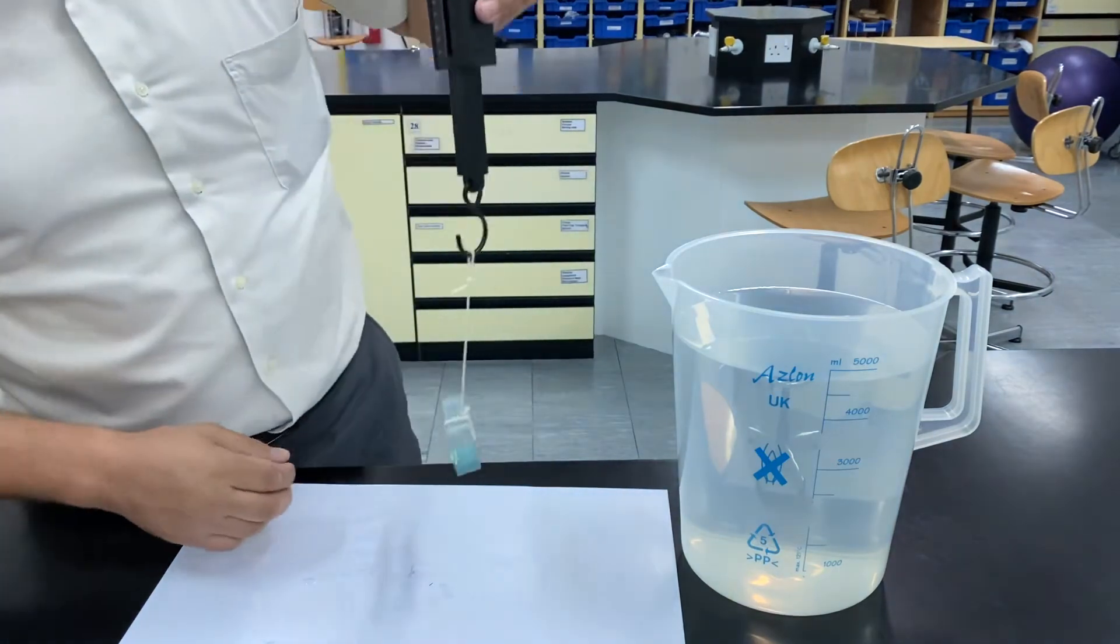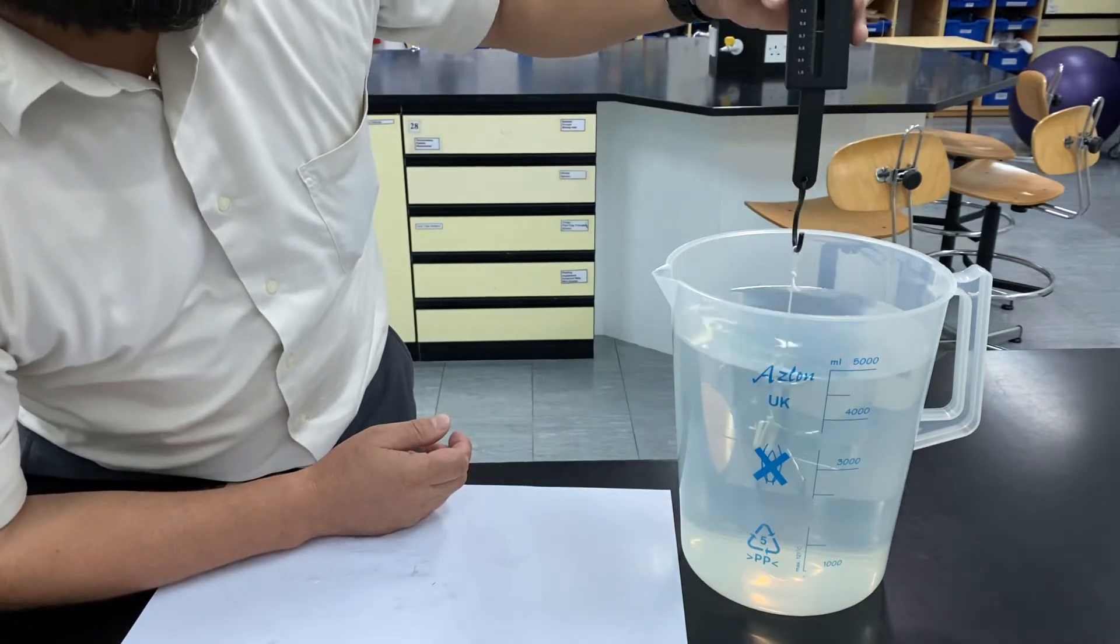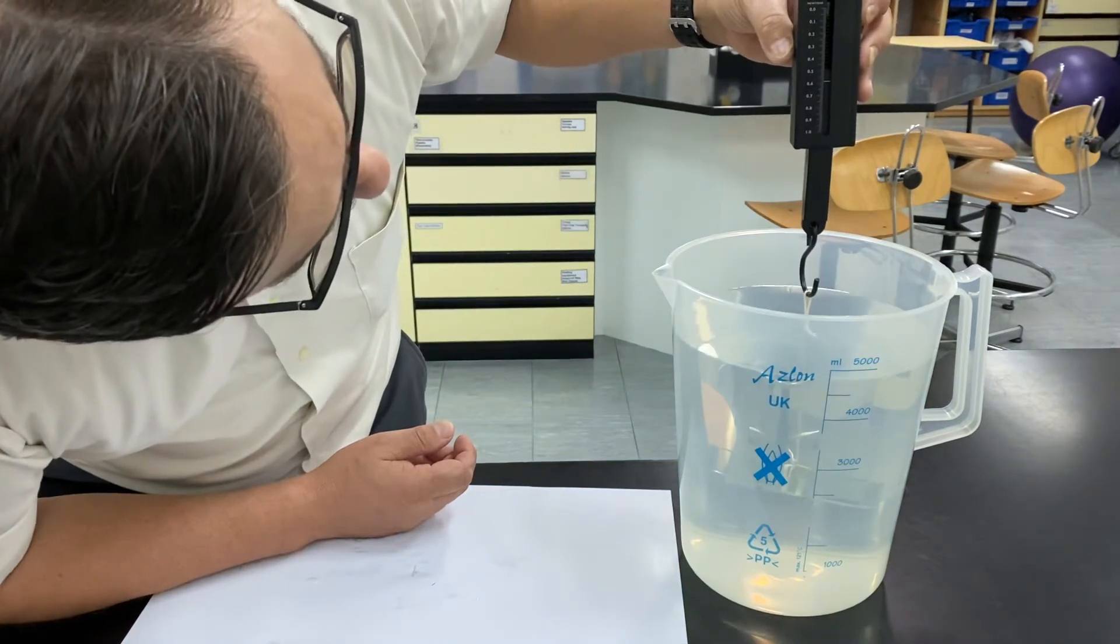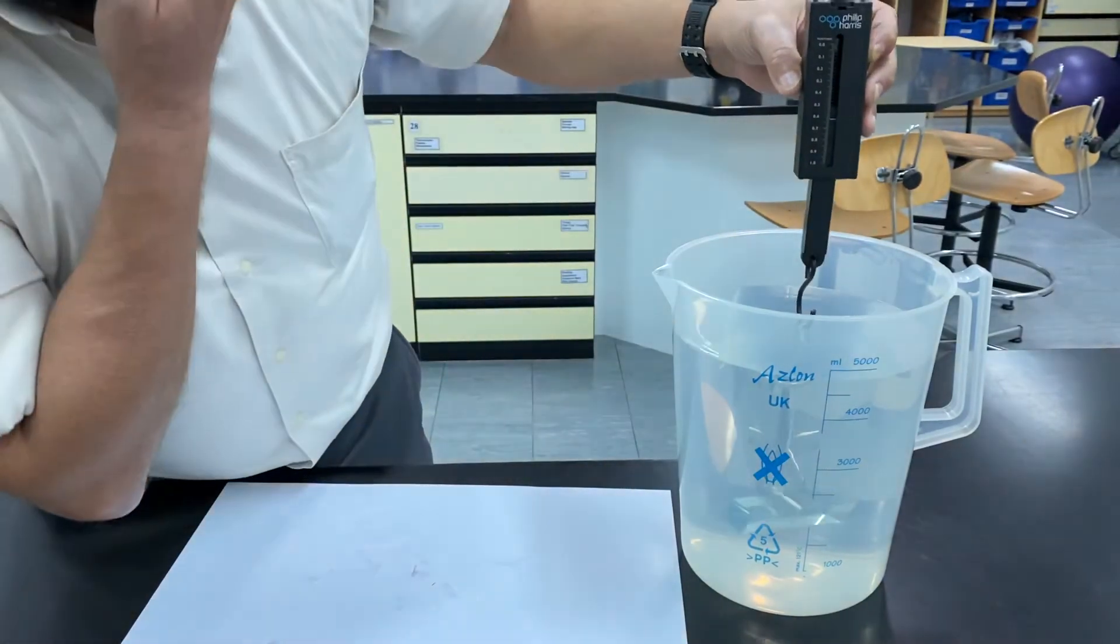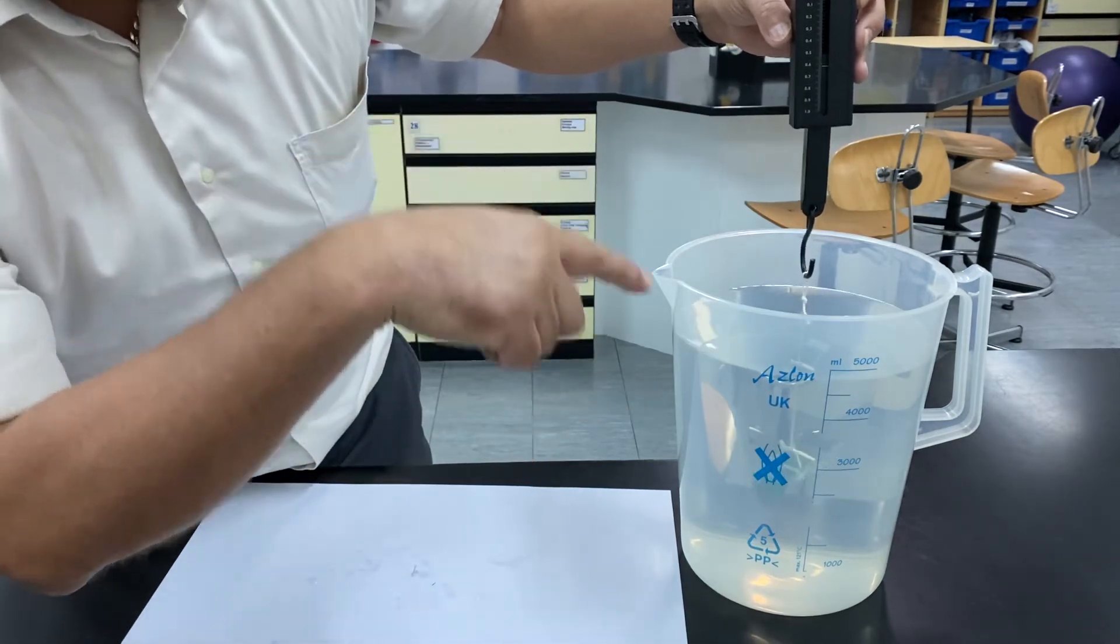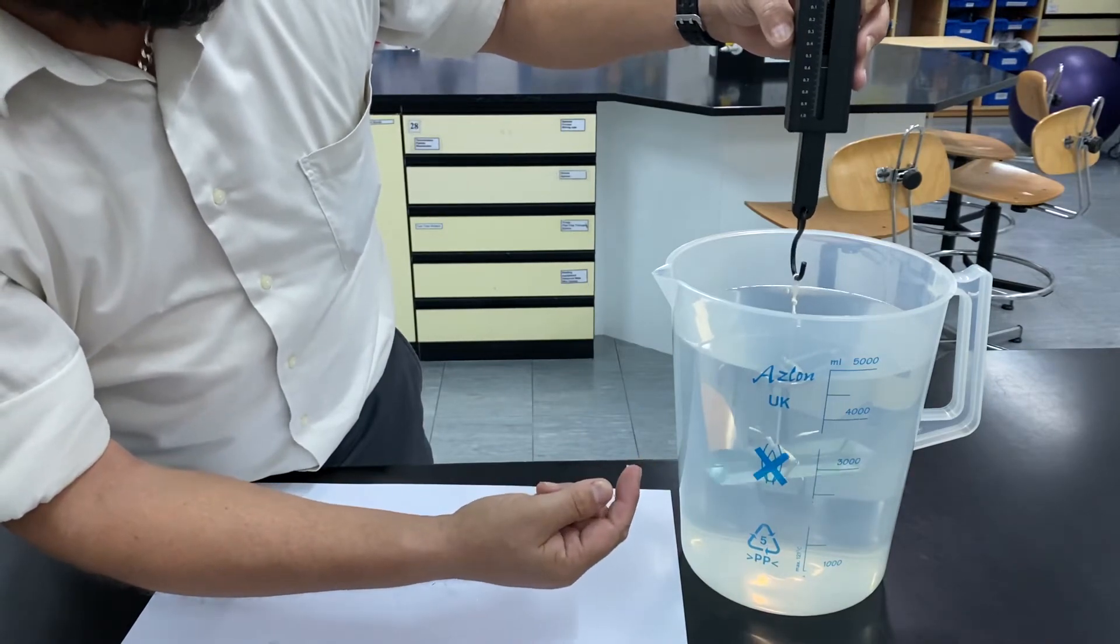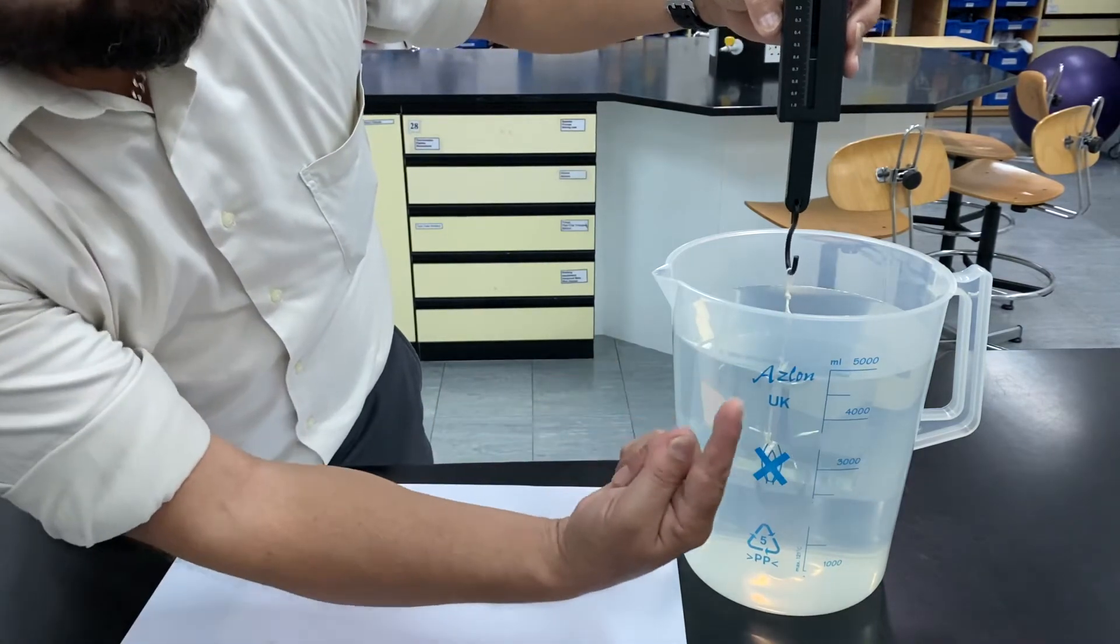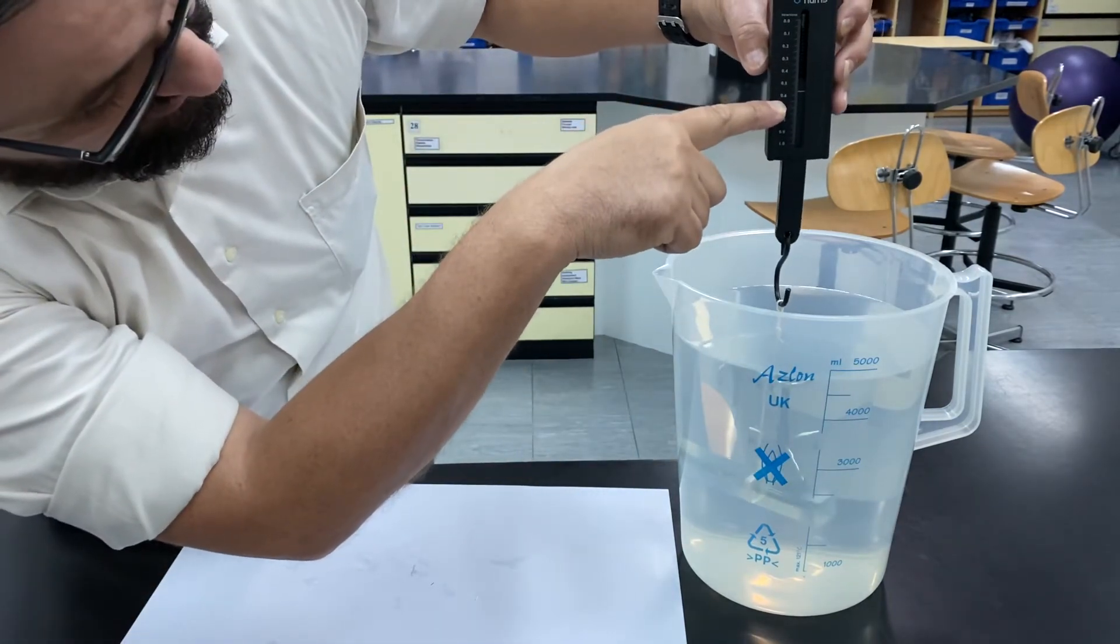Now if we fully submerge this, the newton meter reading is going to go down. Now the newton meter reading is 0.6 newtons. That's because there's still 1.0 newtons pulling down on the glass block, but there's now 0.4 newtons of upthrust pushing it back up. So 0.4 pushing up and 1.0 pulling down gives us this value here.